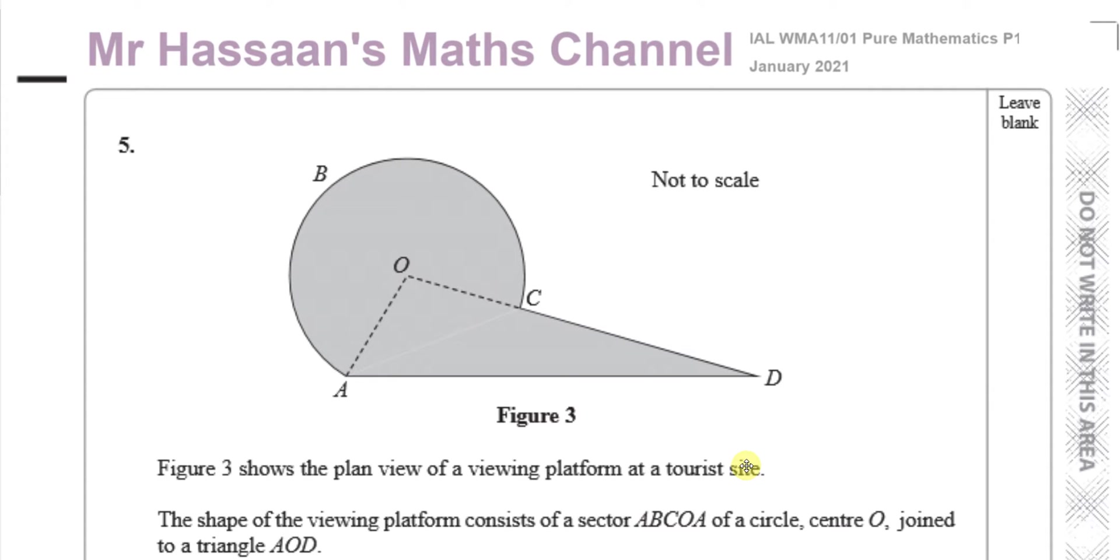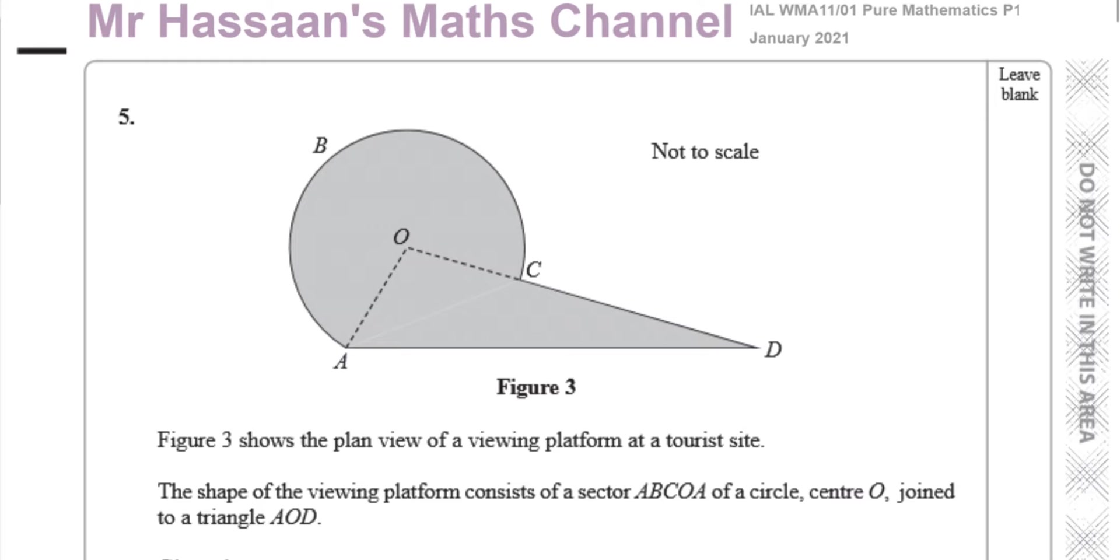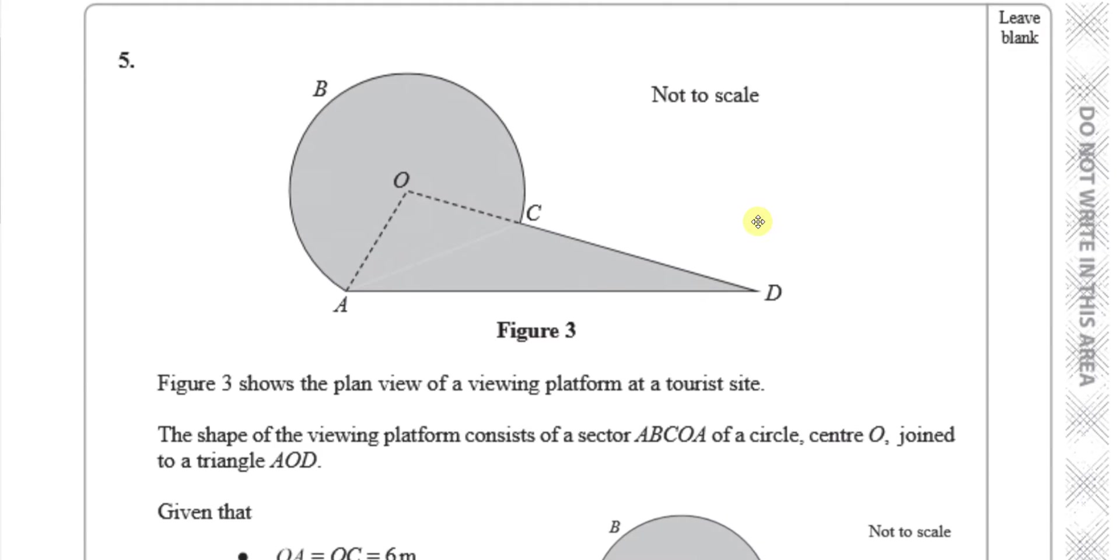This is a question about radian measure. Figure 3 shows the plan view of a viewing platform at a tourist site. The shape of the viewing platform consists of a sector ABCOA with center O joined to a triangle AOD. So this is the viewing platform which is like a sector, this part ABCOA and then a triangle is joined to AOD.